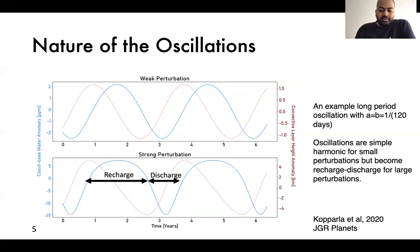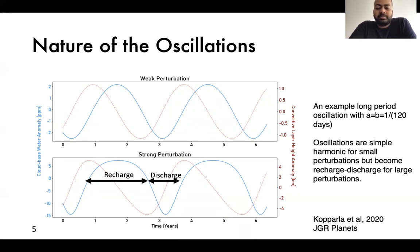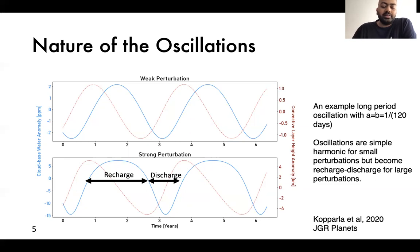This is what the equations look like when you plot them out. For small perturbations, the oscillations are simple harmonic, but for strong perturbations, there's deviation from simple harmonic behavior and it becomes something like a recharge-discharge system. Using A and B with a time period of about 120 days, which is about four months, gives you an oscillation of about a three-year time period, and you can play with these numbers to have oscillations up to a decade long.